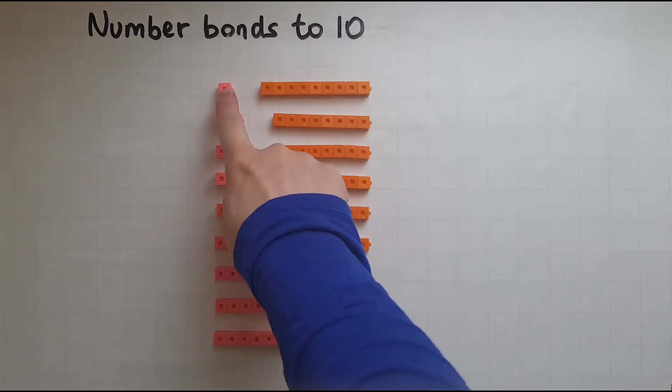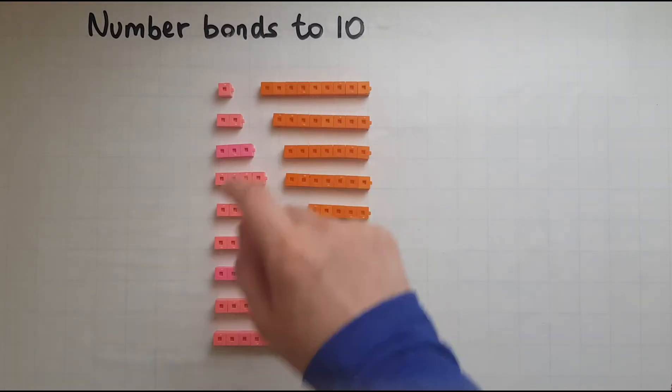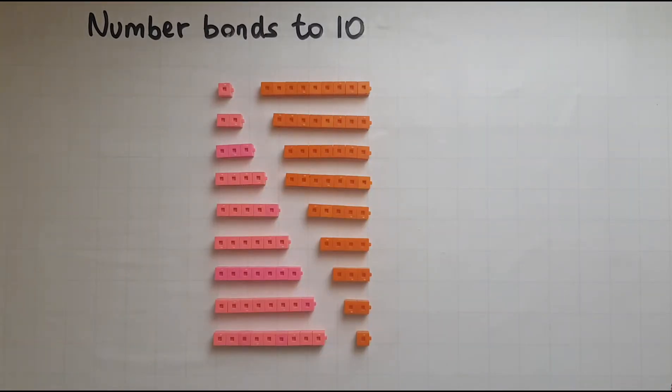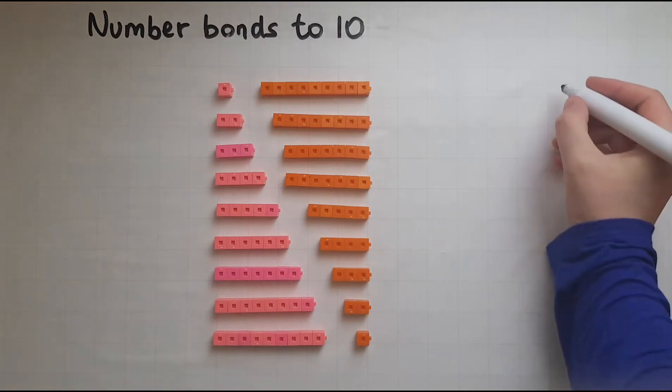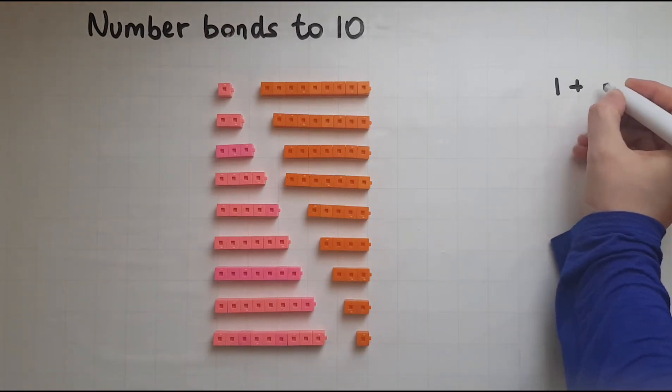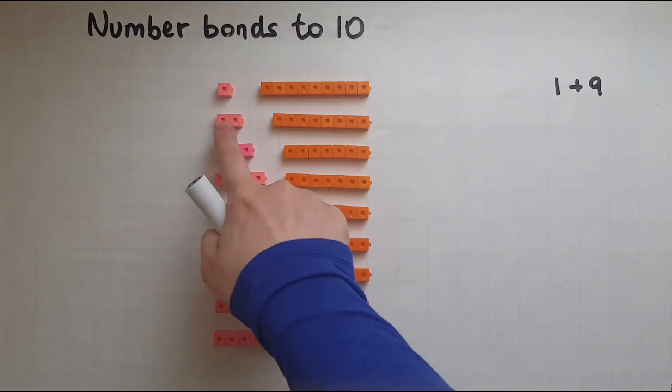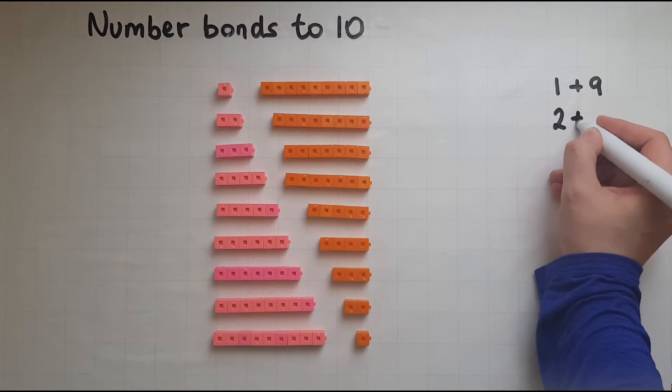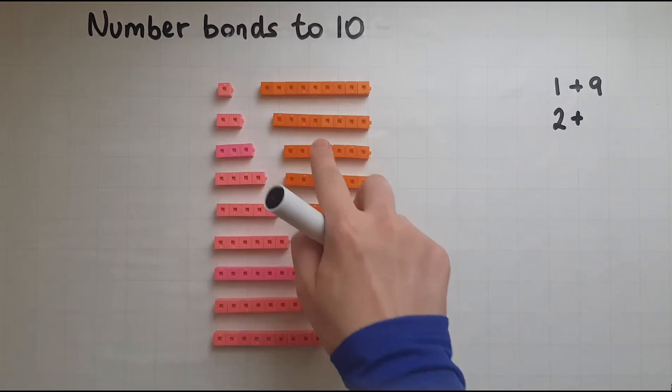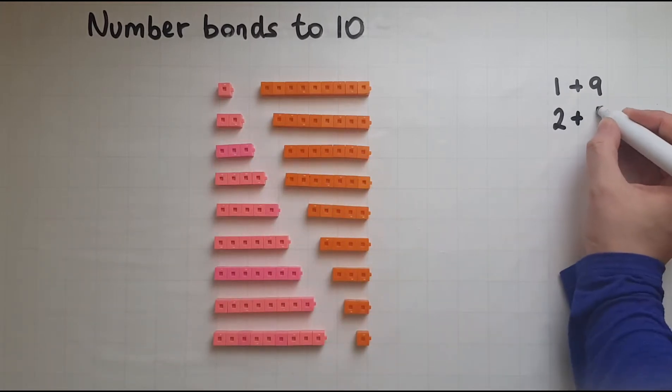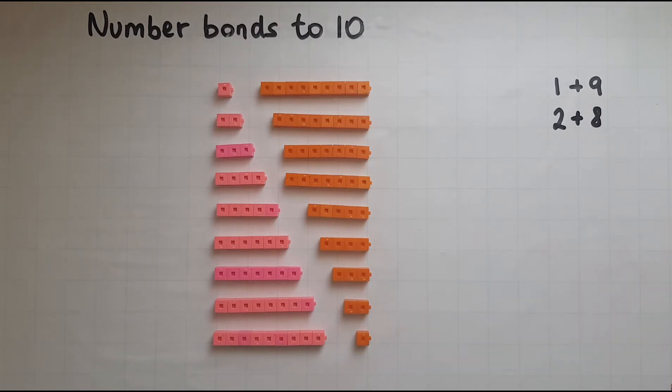So I've got one pink cube and nine orange cubes, so together they will give me 10. Then I have two pink ones plus eight orange ones, I make again 10.